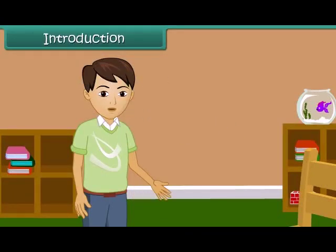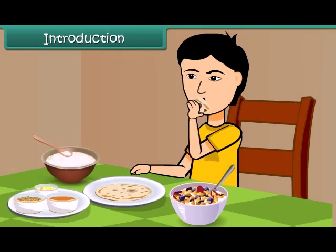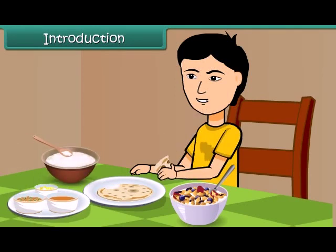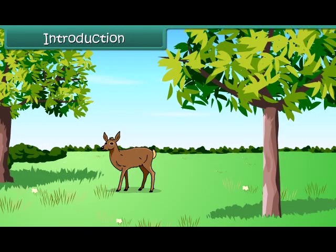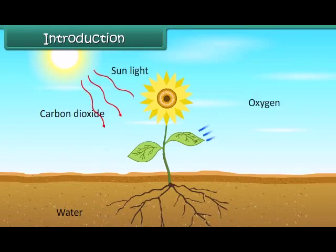Friends, as we all know that we need energy for performing various daily activities. We get this energy from the food that we eat. So we can say that nutrition is a process by which all living organisms take food and utilize it to get energy. Both animals and plants are living organisms. Like animals, plants also require energy for their life activity. Thus, nutrition is an important life process of all living organisms.